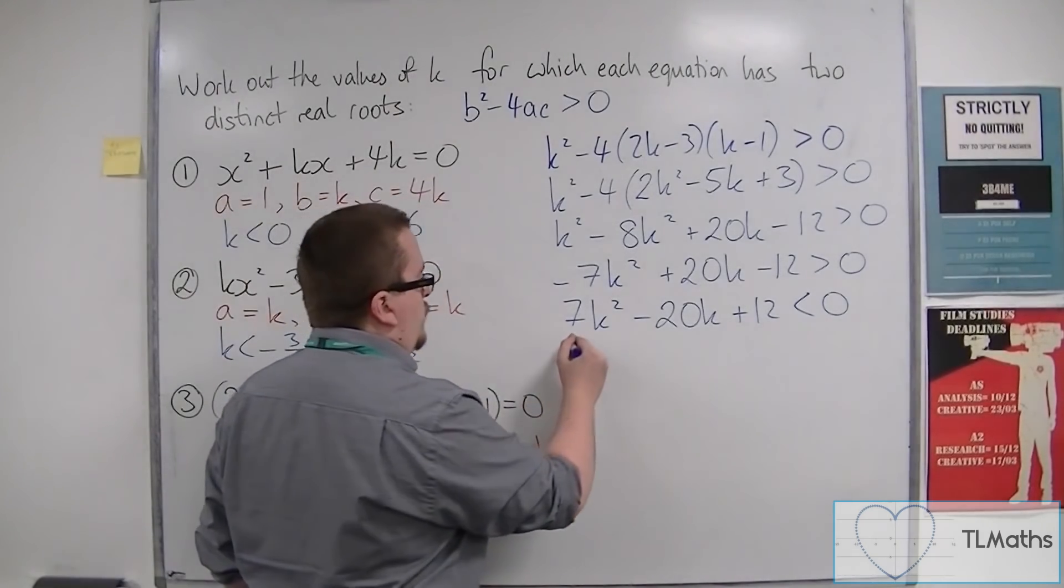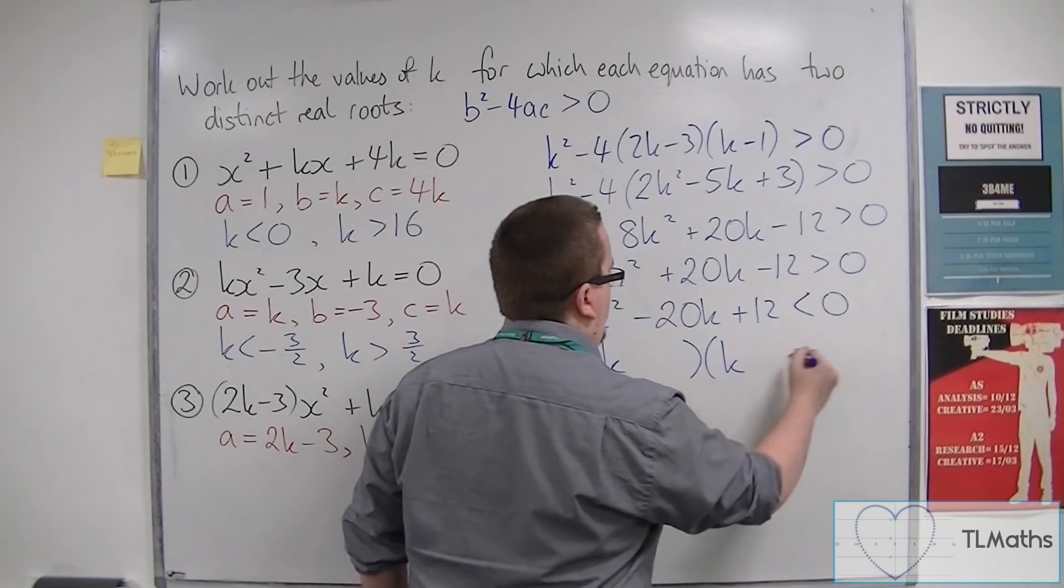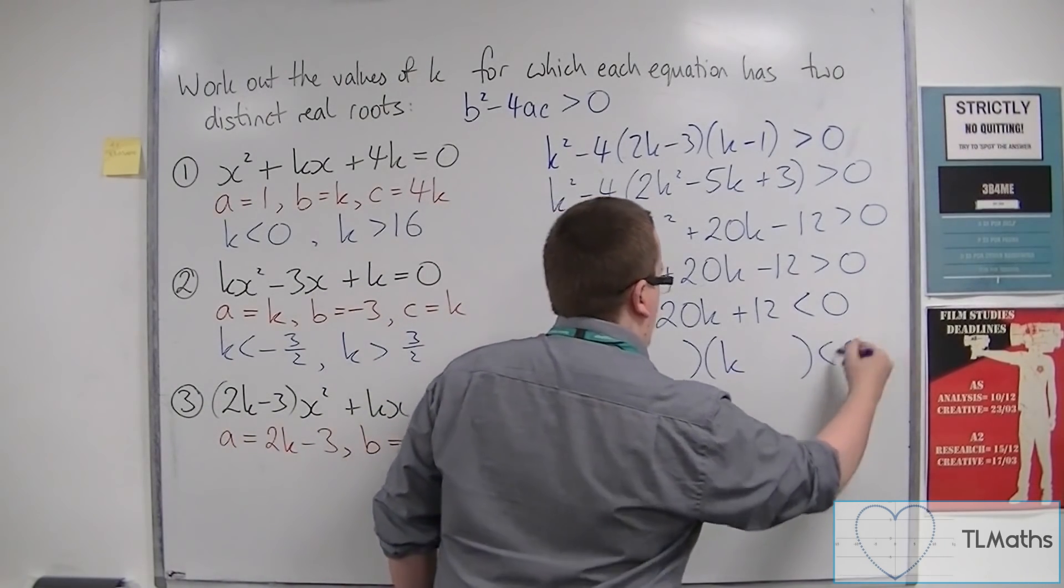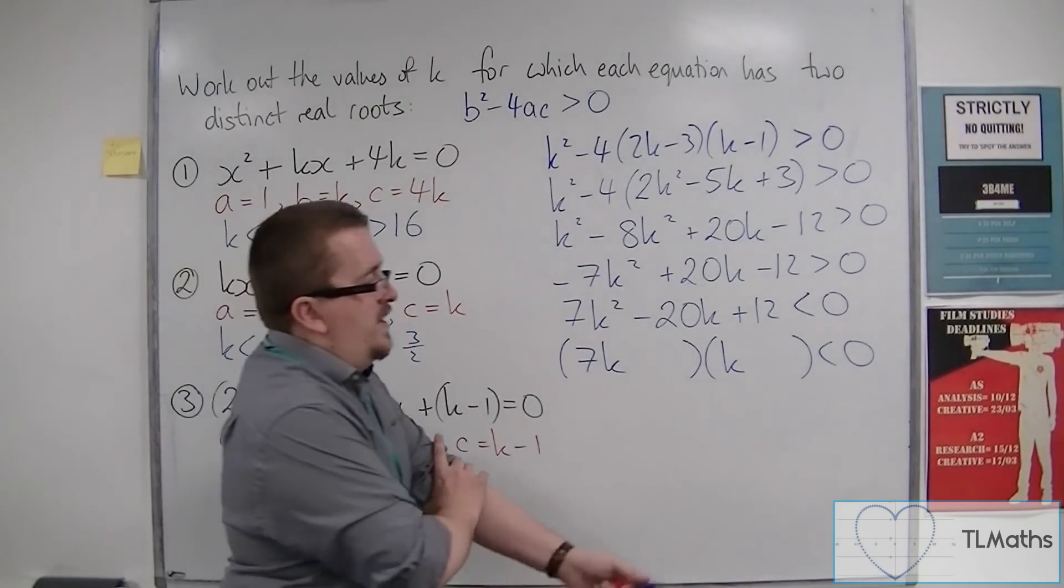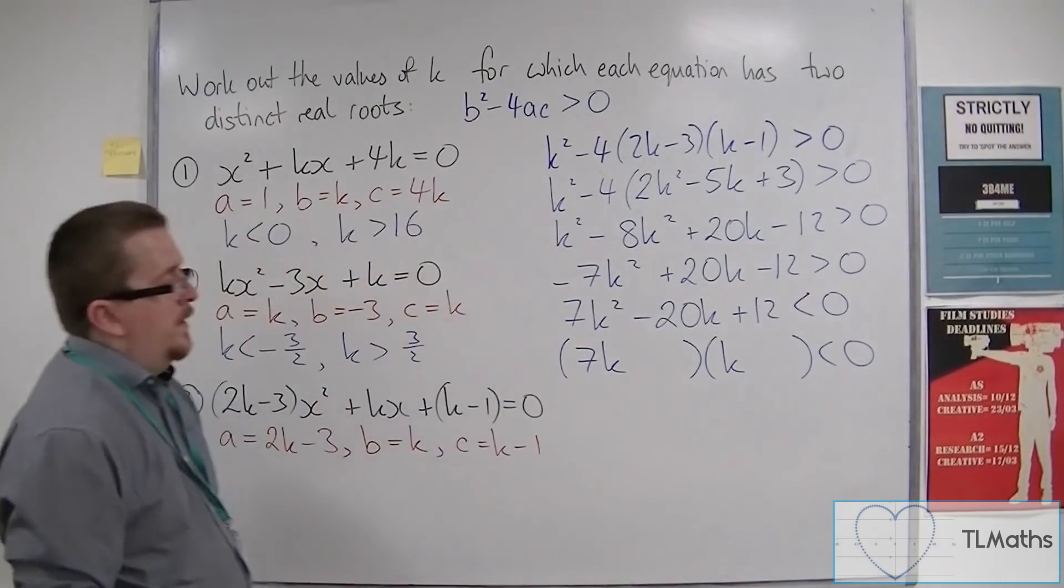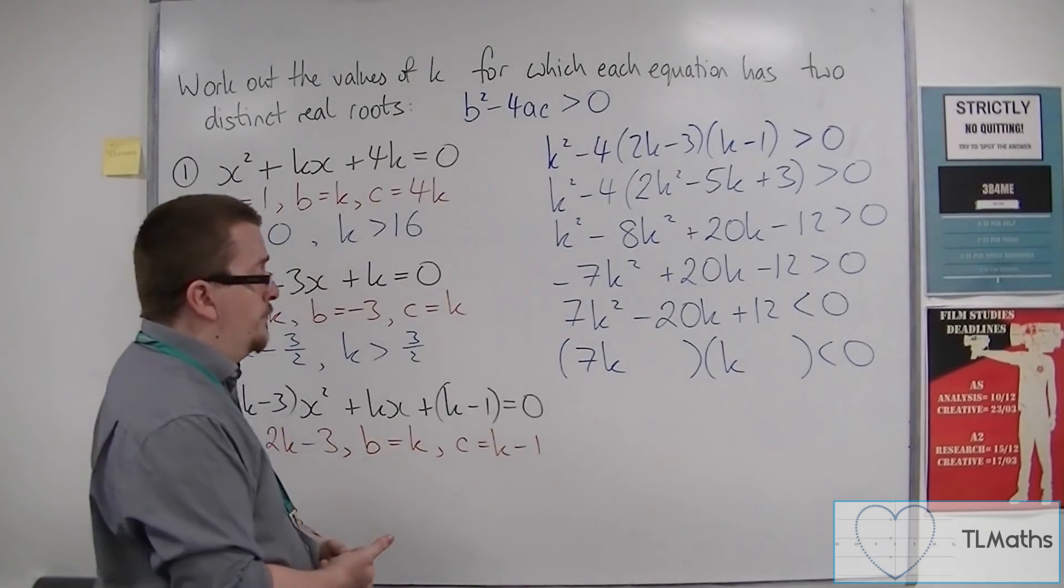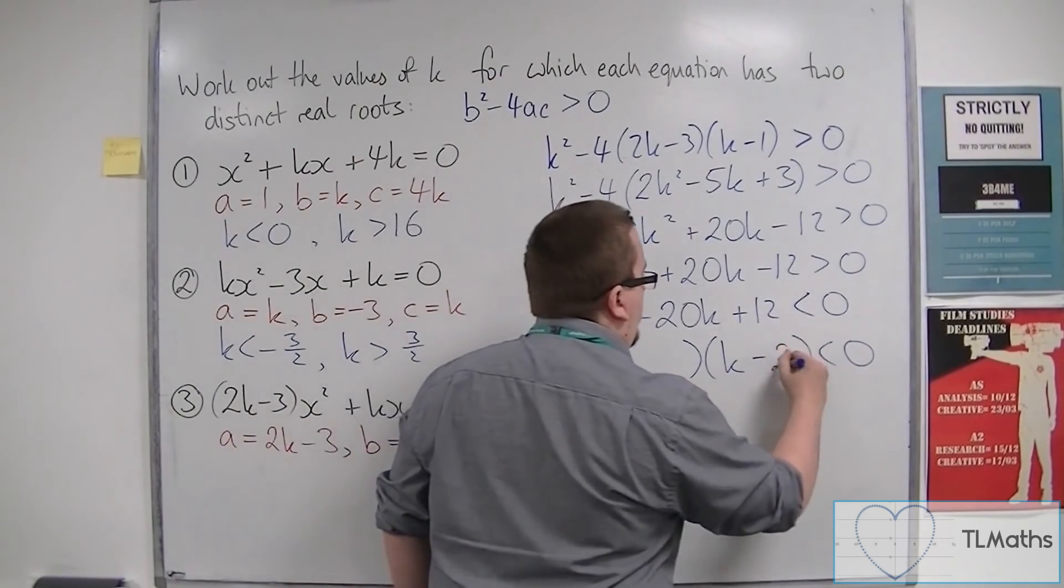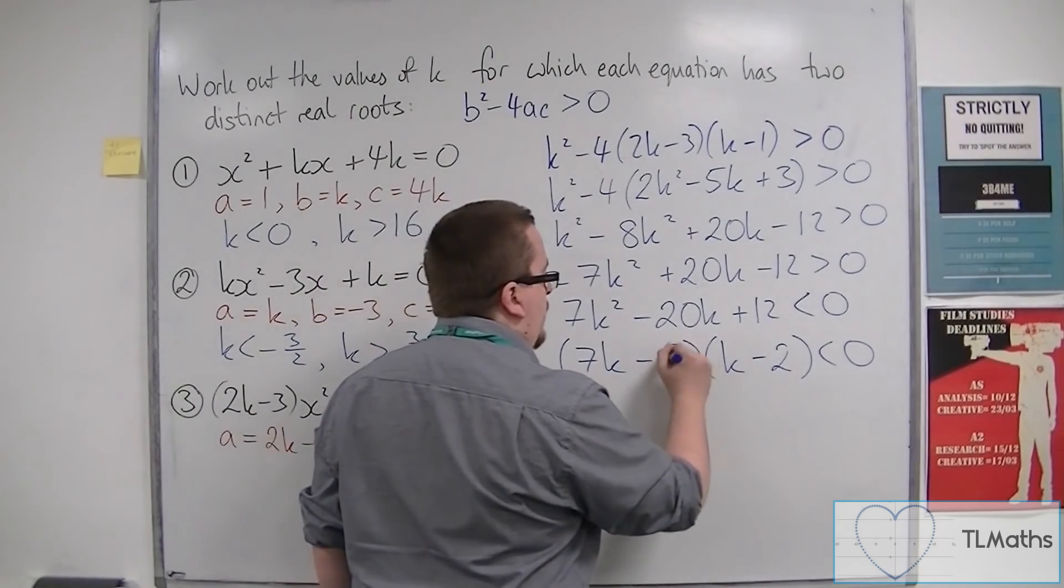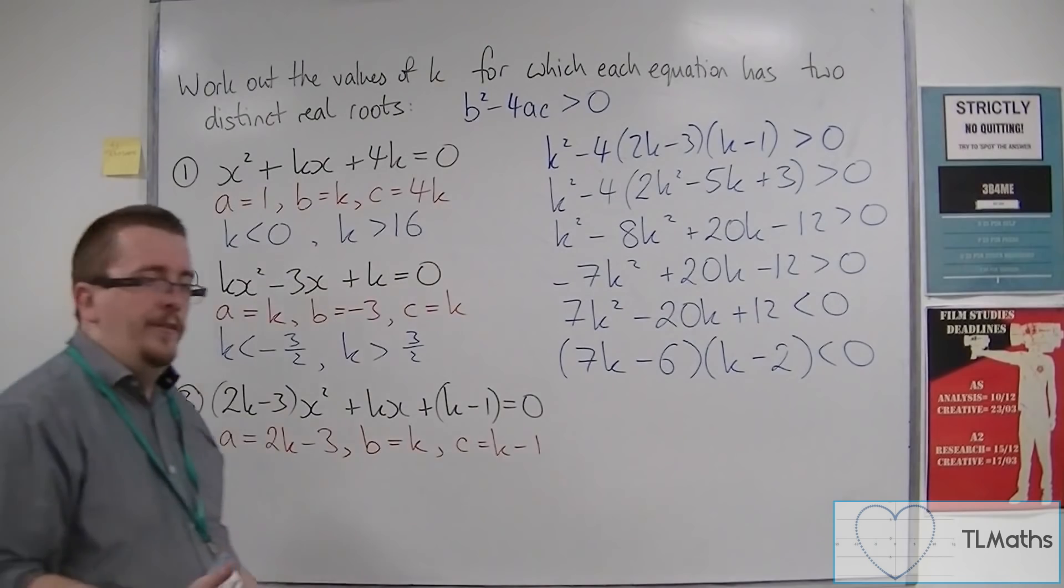So 7k squared minus 20k plus 12 is less than zero. So let's try and factorise this. So I'd have a 7k, and I'd have to have a k there. Now, I need two numbers that multiply together to make the 12. So it could be 2 and 6, for example. And 7k times minus 2 is minus 14k. And then I need another 6k to take away. And so that's it factorised.